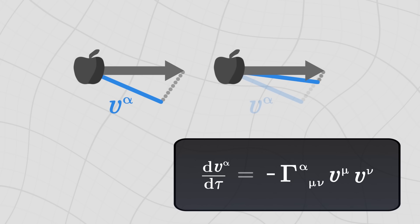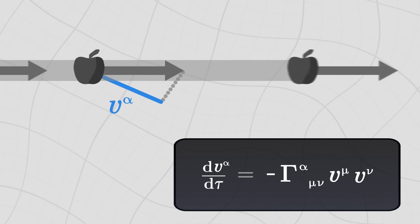The geodesic equation thus allows us to predict the whole trajectory of an object, as long as we know its velocity at a given moment, and the value of each Christoffel symbol all throughout the grid.